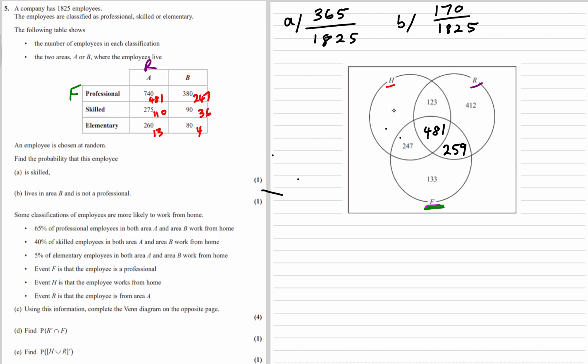And then H was work from home. So we've already got the 481, and the 247. 123 is the 110 and 13. So what's left in H, just the 36 and the 4, which makes 40.